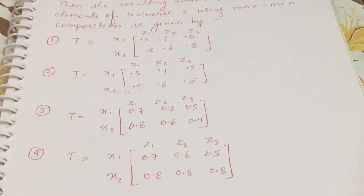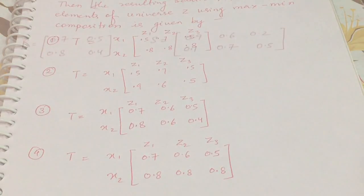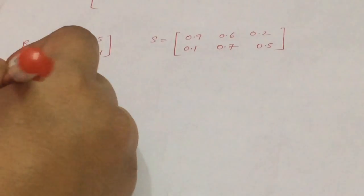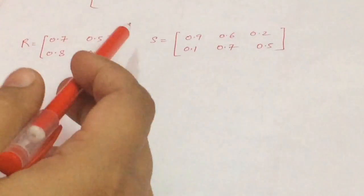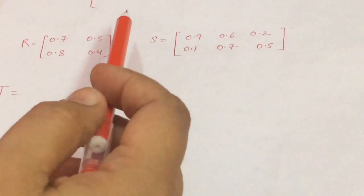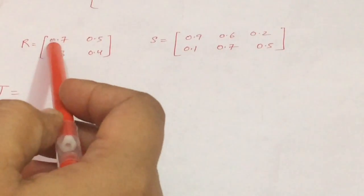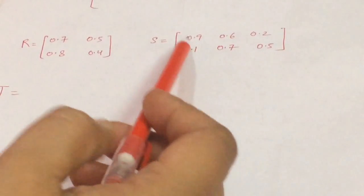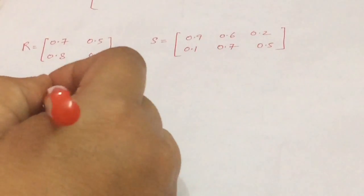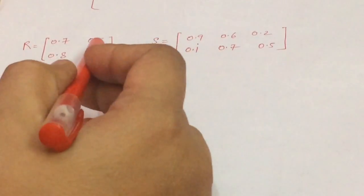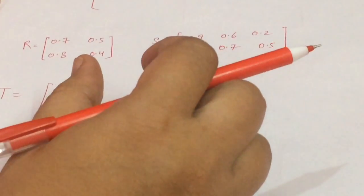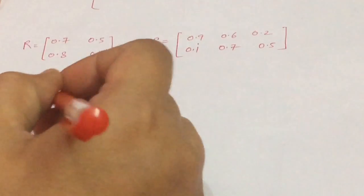I explained how to find max-min composition in earlier fuzzy logic videos, and we'll use the same method here. To find the composition, we follow a procedure similar to matrix multiplication. In regular matrix multiplication, we multiply corresponding elements and add them. But in max-min composition, instead of multiplying and adding, we find the minimum of the paired elements first.